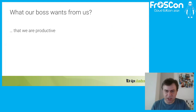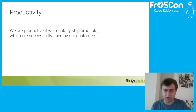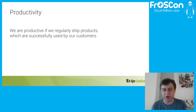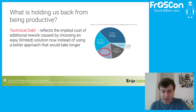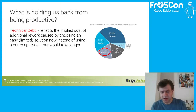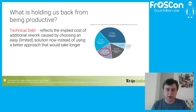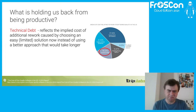Generally, what our managers want is that we are productive. Productivity, in a simple definition, means we produce products that are successfully used by our customers. But what is holding us back from being productive? There is a report showing that 19% of what holds us back is technical debt.